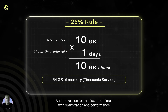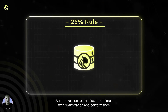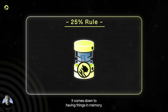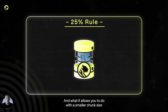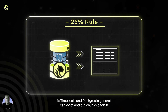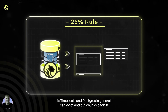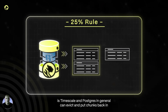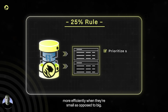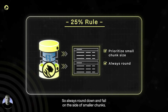The reason for that is performance optimization often comes down to having things in memory. A smaller chunk size allows TimescaleDB and Postgres to evict and reload chunks more efficiently compared to larger chunks.